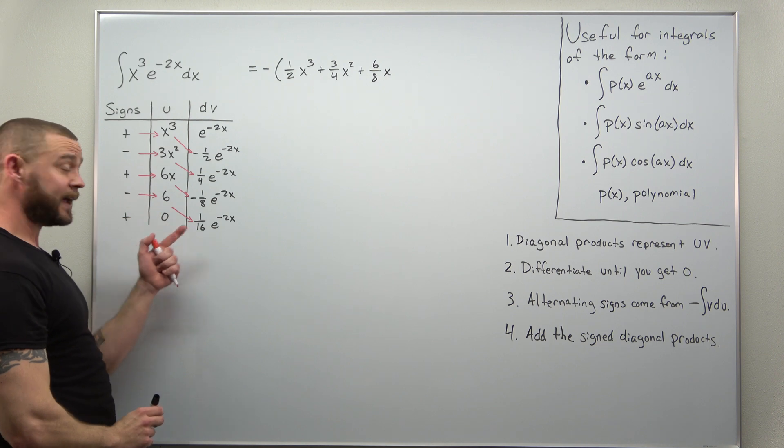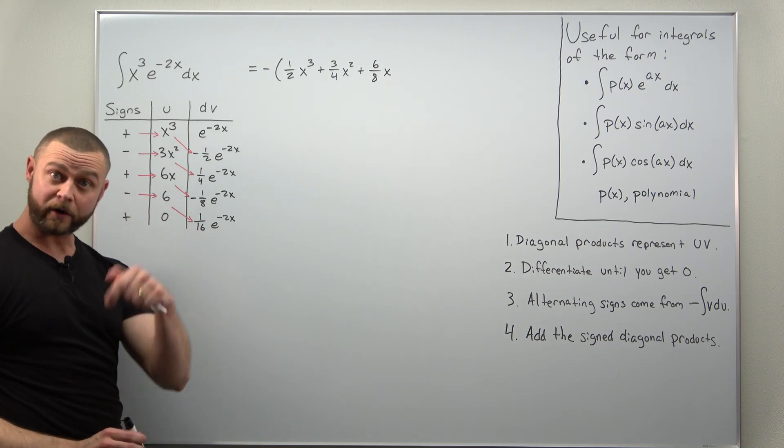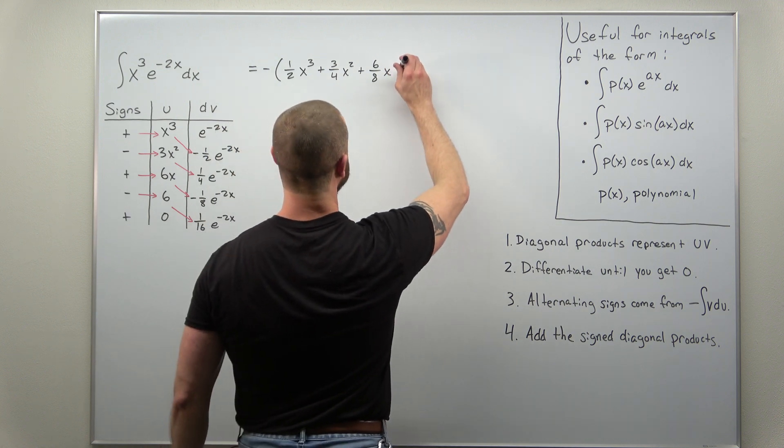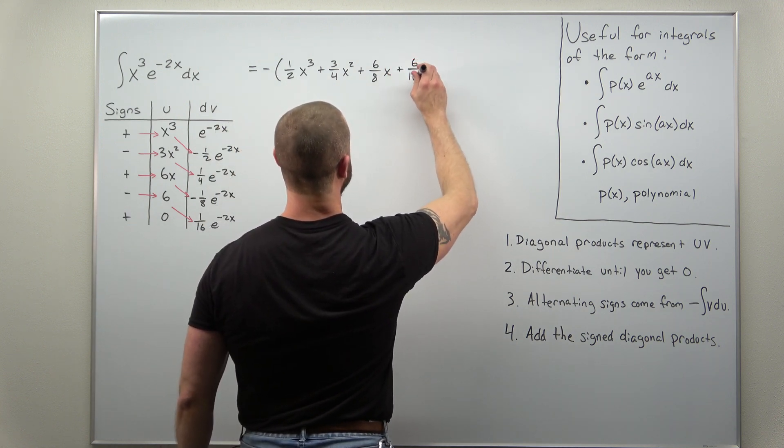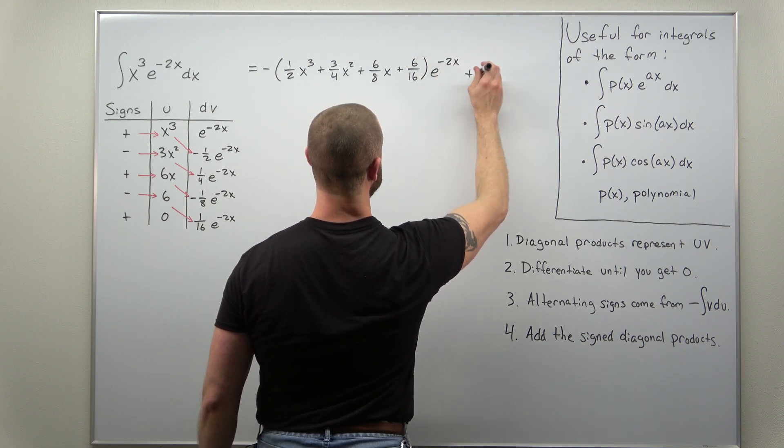And then your last signed diagonal product looks like you're going to have 6 times 1 over 16. So we'll write that as plus 6 over 16. And then our factor of e to negative 2x goes at the end.